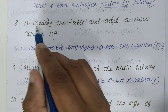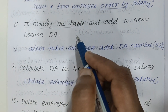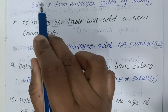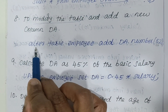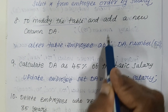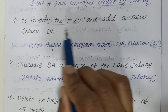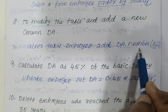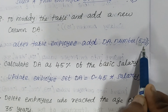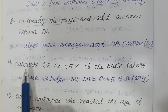To modify the table and add a new column 'DA': whenever they mention 'modify' or 'add a new column', use the ALTER command — ALTER TABLE employee ADD da. DA is always a floating-point value, so the data type is NUMBER(5,2). Close with double brackets and a semicolon.